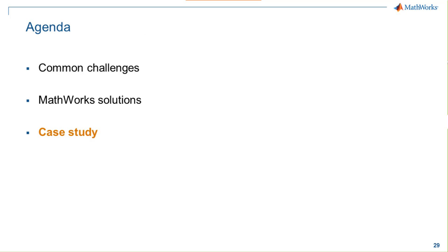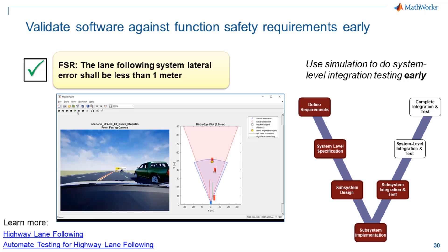Finally, we'll come back to the case study. Chris will show how the features discussed in this section tie back to the original lane-following example. The Highway Lane-Following reference application that ships in the Automated Driving Toolbox has implemented some of the capabilities Mike just shared. Let's see how we can use it to validate our functional requirement.